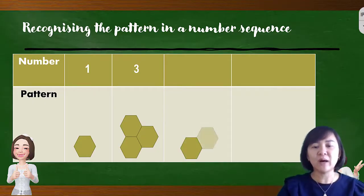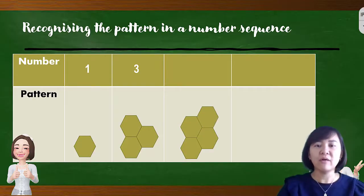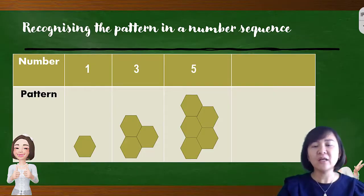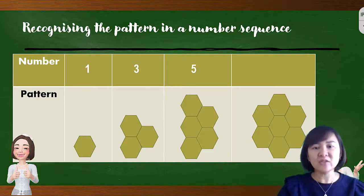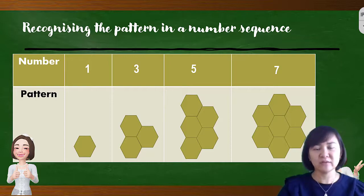The next pattern has 5 hexagons. The one after that has 7 hexagons. From the activity, we can notice that the pattern is increasing, and the pattern is plus 2.